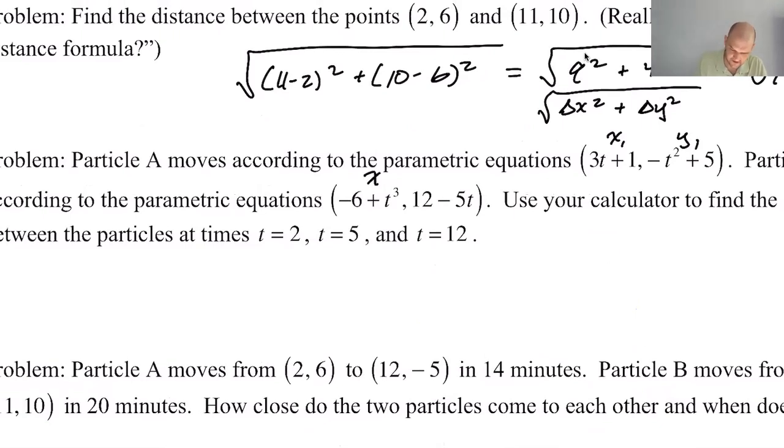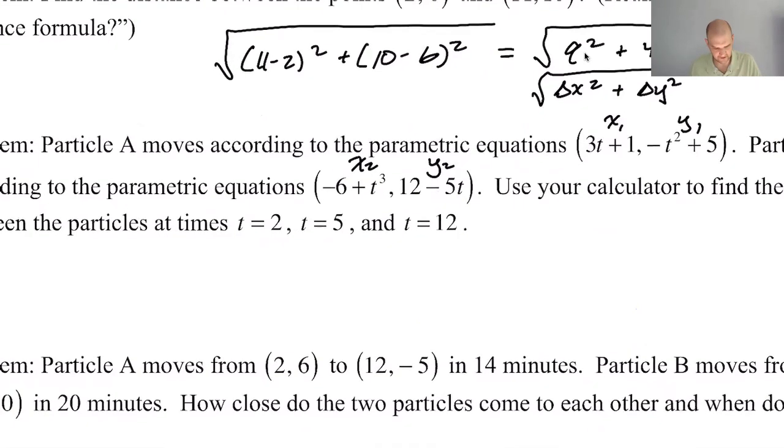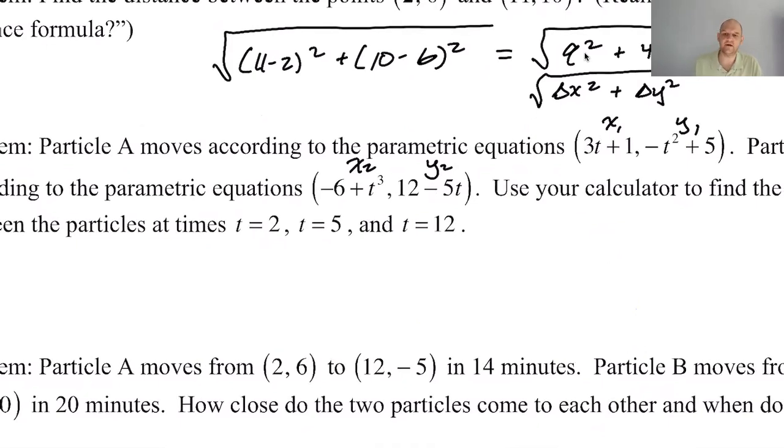The other one is particle B. This is x₂ and y₂. Here, this is a cubic and this is linear. If you said y equals that, then t equals (y - 12)/-5, then you plug it in here and you get x is -6 plus y cubed. So y is the cube root of x—it's like a cube root.